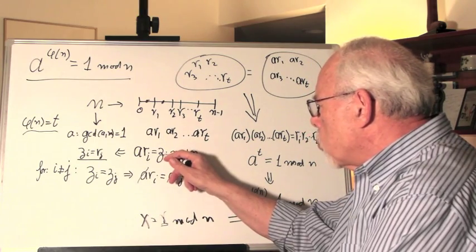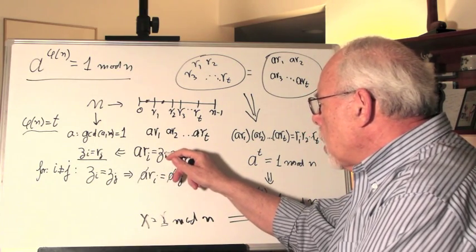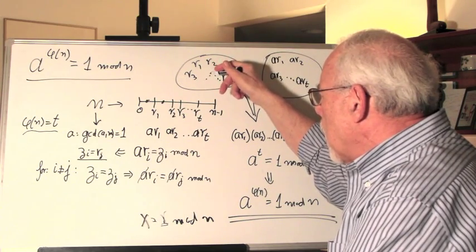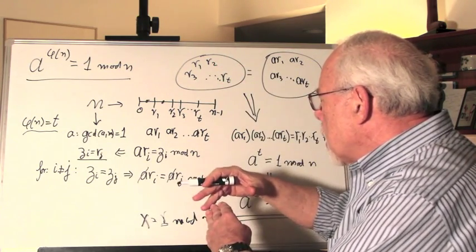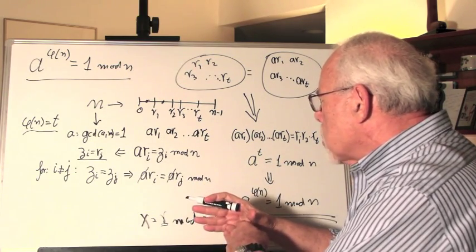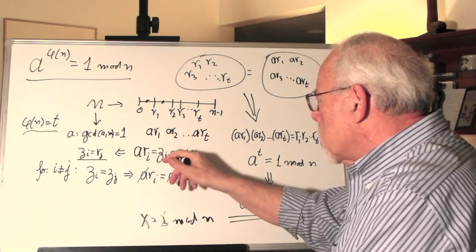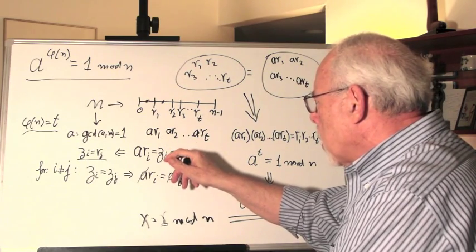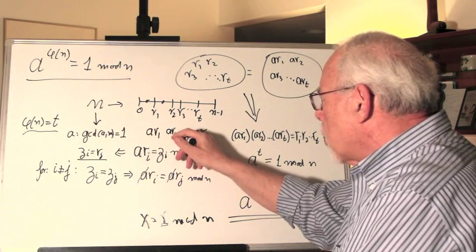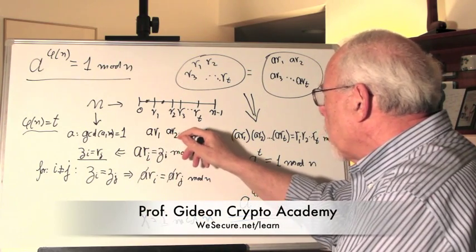All those residues are a member of this set. And it is a matching of one to one. So there are no two residues that reflect the result of two different r's.